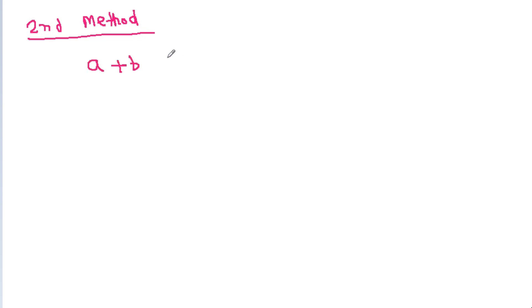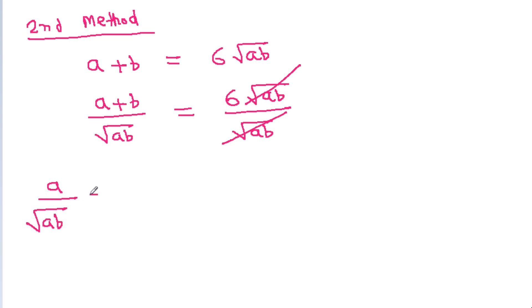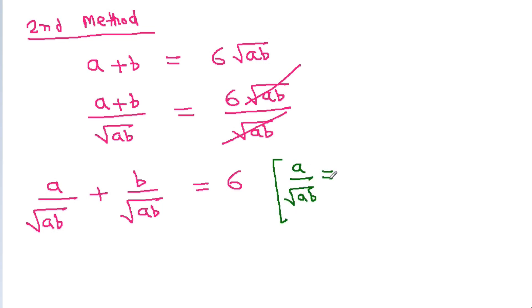For the second method, we have a plus b equals 6 root ab. If we divide both sides by root ab, then a plus b over root ab equals 6. This gives a by root ab plus b by root ab equals 6.